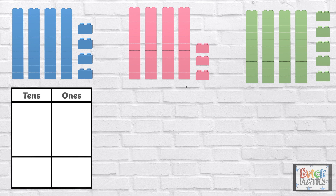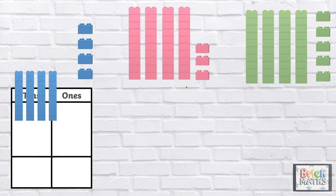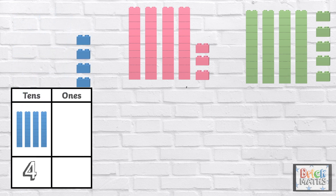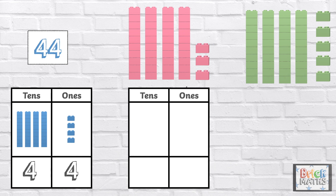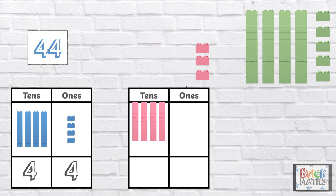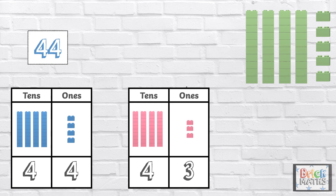Let's start with the blue bricks. There are four 10s and four 1s, so there are 44 blue bricks. Now let's count the pink bricks. There are four 10s and three 1s, so there are 43 pink bricks.